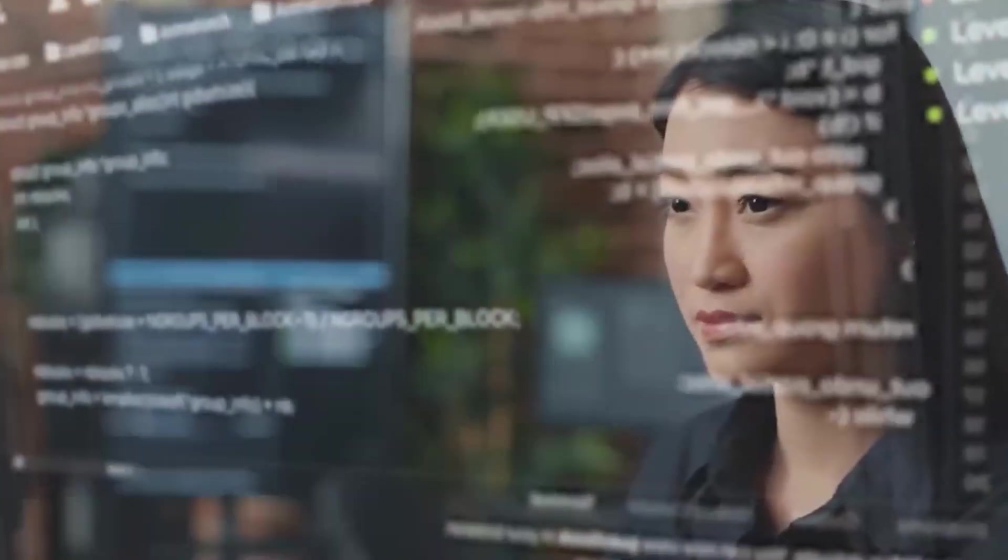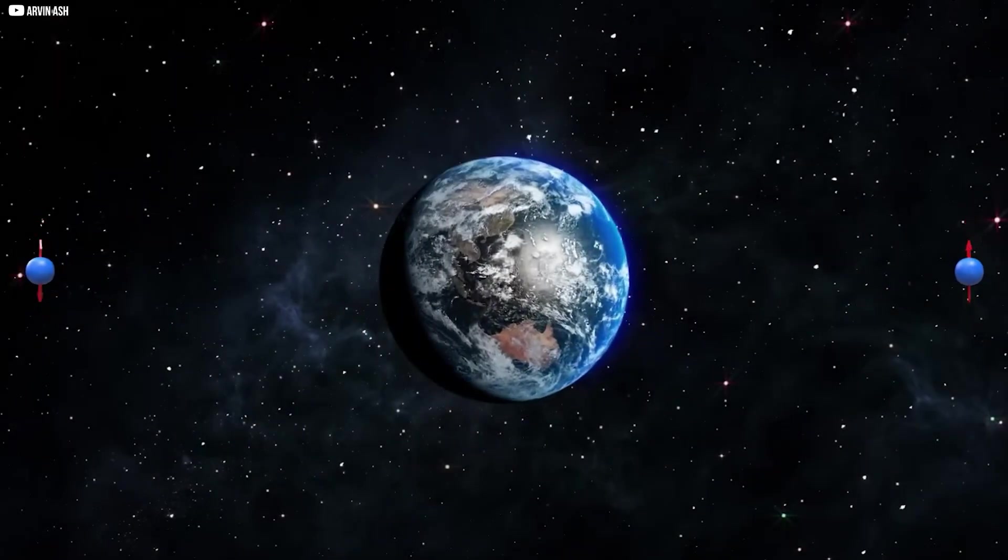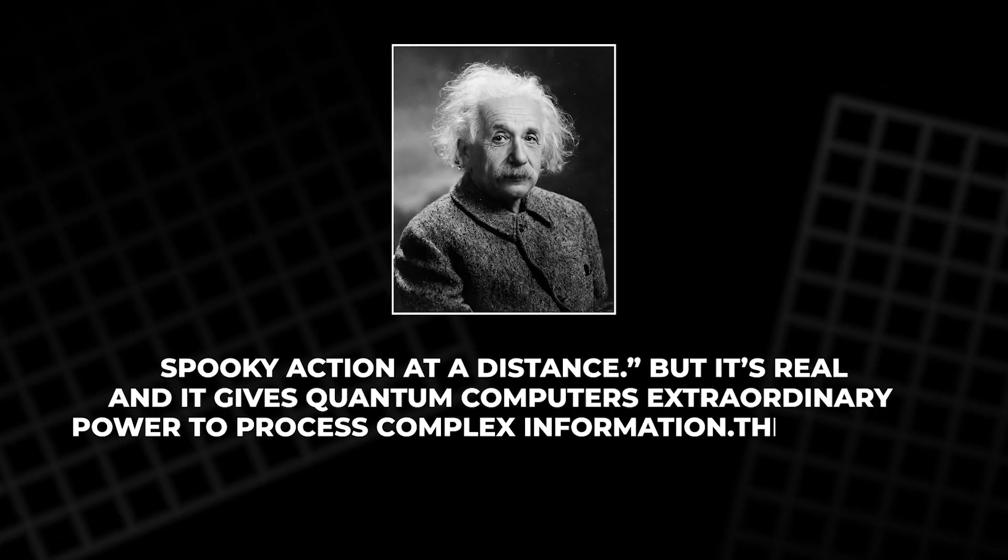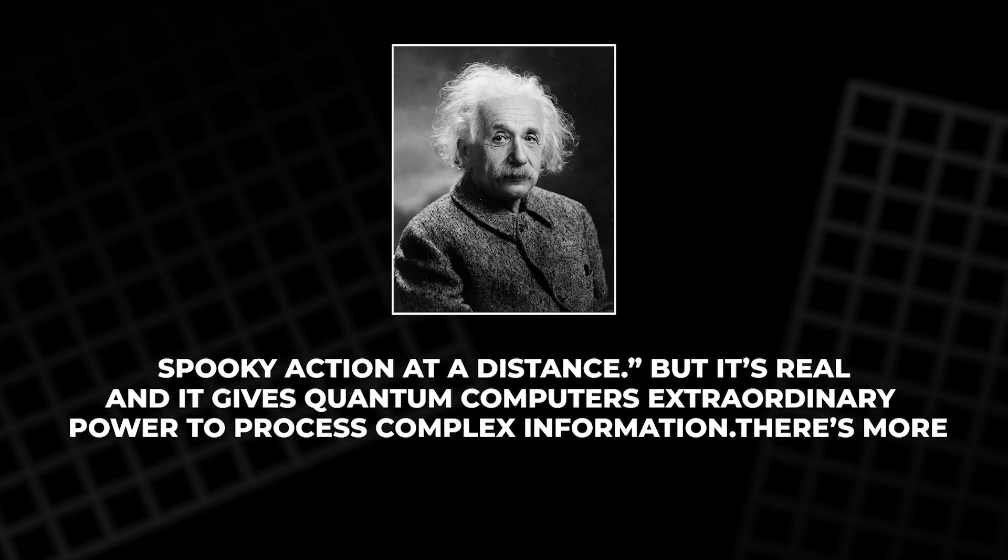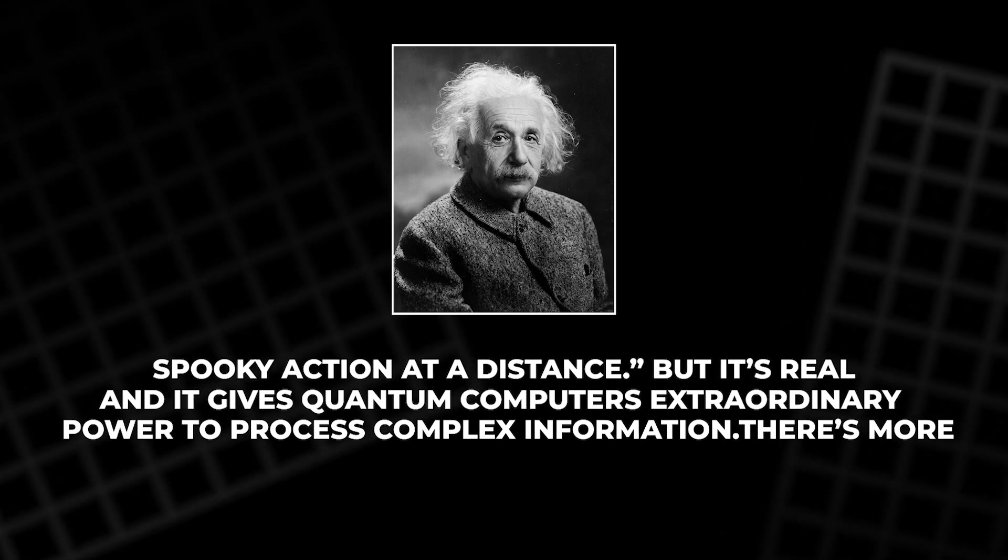Another idea is entanglement. When two qubits are entangled, their states are instantly connected, no matter how far apart they are. Einstein called it spooky action at a distance. But it's real, and it gives quantum computers extraordinary power to process complex information.